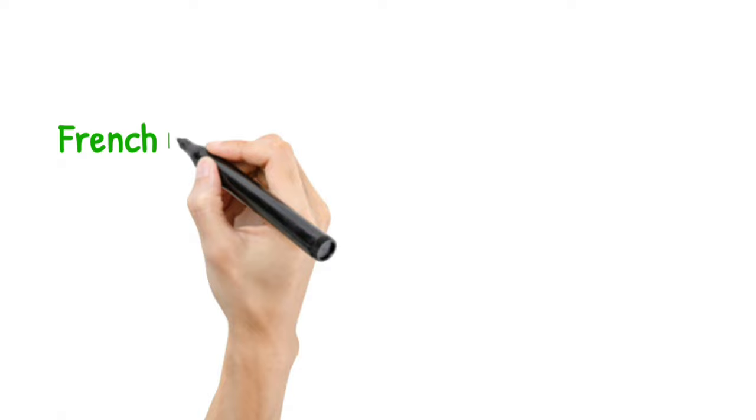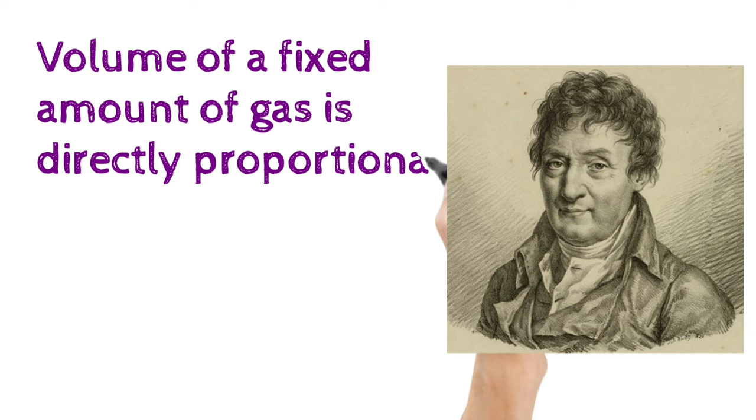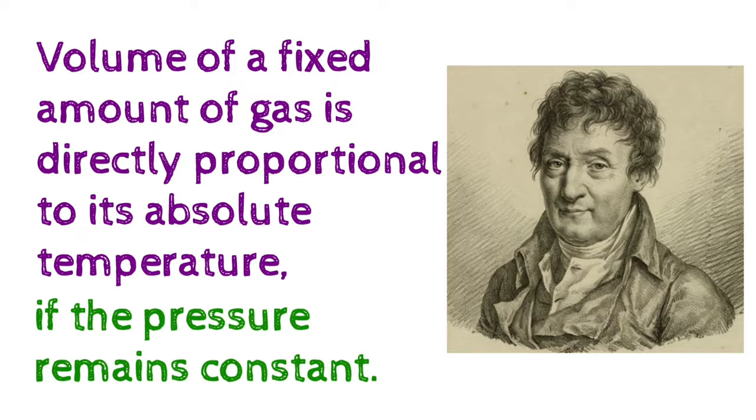Now this relation was first suggested by the French physicist Jacques Charles in about 1787. Charles's law states that the volume of a fixed amount of gas is directly proportional to its absolute temperature if the pressure remain constant.